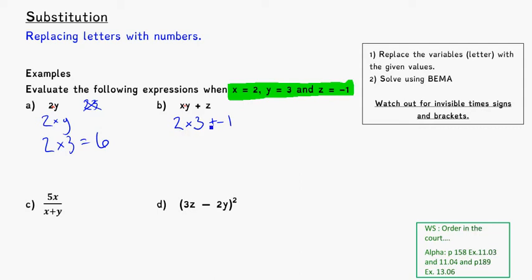Timesing first because of our order of operations, 2 times 3 gives me 6. And what's plus a negative 1? Remember that a positive and a negative, when you're adding them, become a negative. So that's basically 6 minus 1, which would be equal to 5.